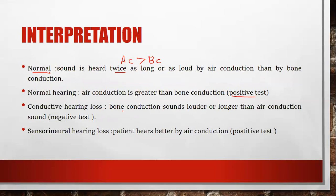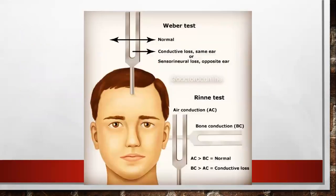In conductive hearing loss, bone conduction sounds louder or longer than air conduction — this is considered a negative Rinne test. When the patient has conductive hearing loss, there is an obstruction from the ear canal or eardrum due to earwax or a perforated eardrum. For sensorineural hearing loss, the patient hears better by air conduction — air conduction is still longer than bone conduction — and this is considered a positive test. For air conduction testing, we place the tuning fork about 2 inches from the external ear; for bone conduction, we place it on the mastoid process just behind the ear.